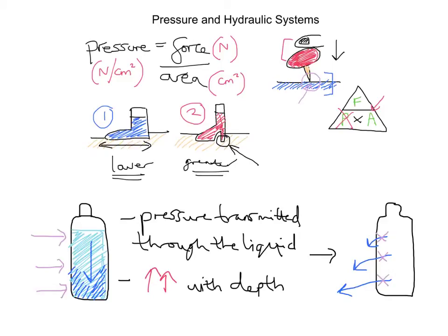Let's move on and talk about hydraulic systems. These use the principle that pressure is transmitted throughout a liquid, allowing movement to be transferred from one part of a machine to another without mechanically linking them. All hydraulic systems use two pistons linked via a pipe carrying a special oil called hydraulic fluid.